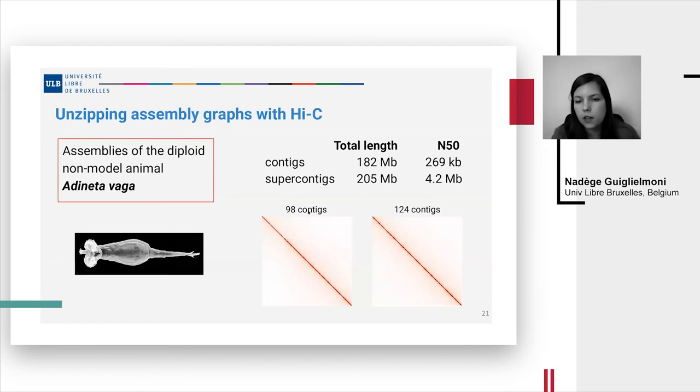And you can see the contact maps of two super contigs. And of course, the first thing is that we need to check that our tool is working properly. Since it's based on Hi-C data, you expect the Hi-C contact map after HiC2GFA to look good. And here, this super contig is a connection of 98 contigs and this one is a connection of 124 contigs. And the contact maps look as we would expect.